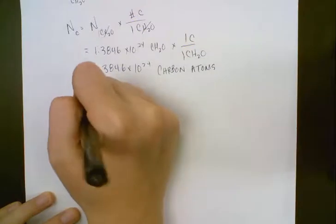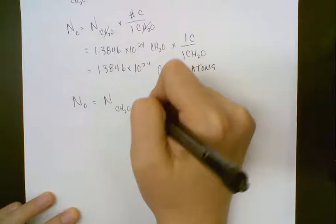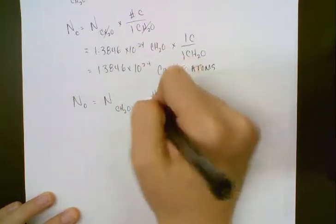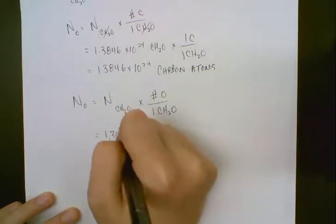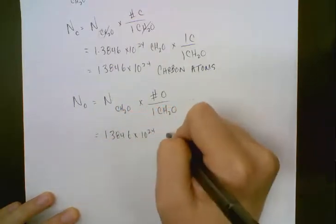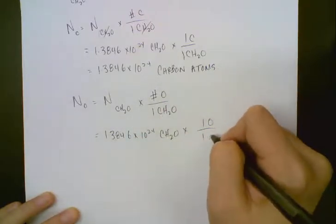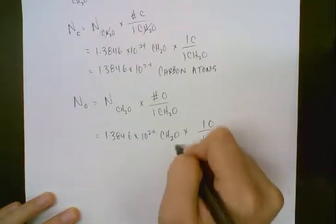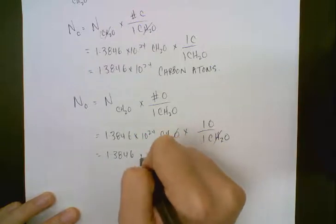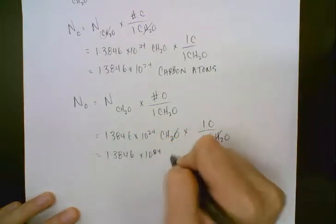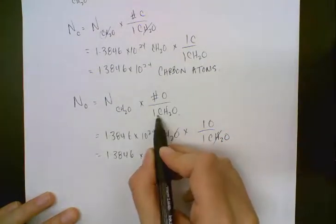We'll do the same thing for oxygen. We're going to take our number of CH₂Os and multiply it by the number of oxygen we have in any 1 CH₂O. This is going to be the same number as well, because again we're multiplying by only 1 oxygen in any 1 CH₂O. Those units cancel out and we're left with oxygen atoms. Because there's only 1 carbon and 1 oxygen in CH₂O, that makes sense.